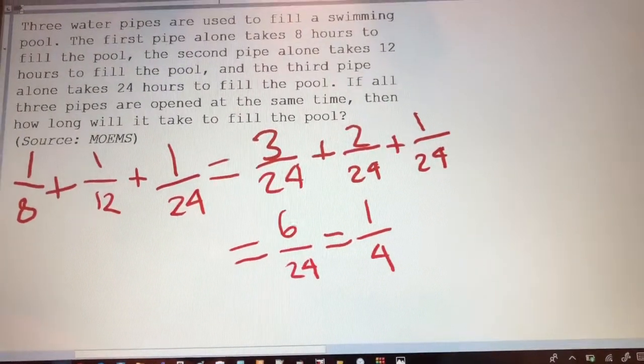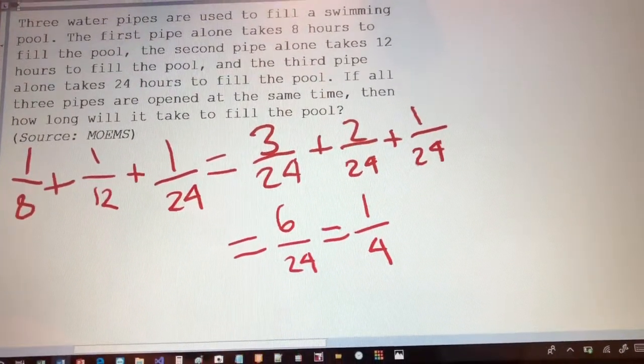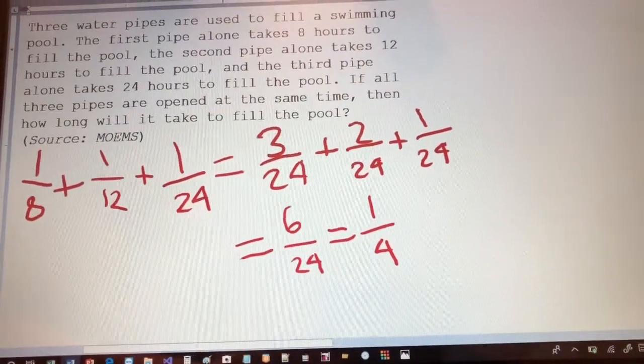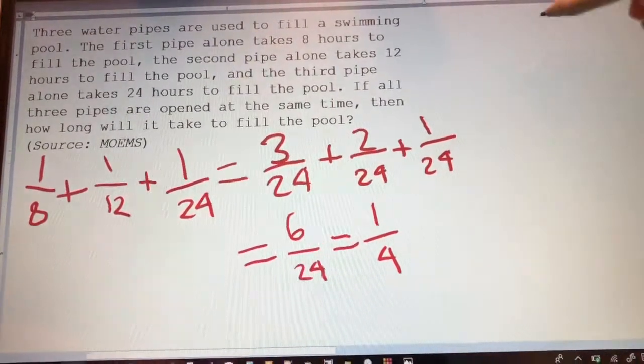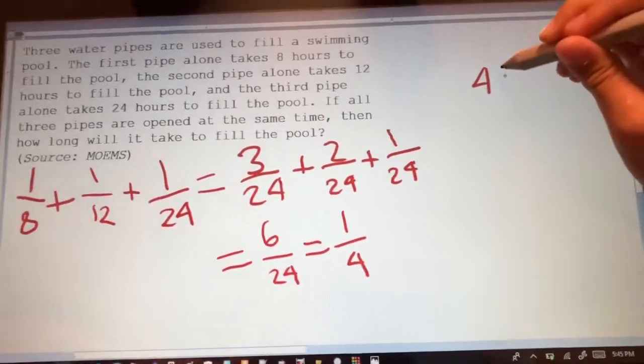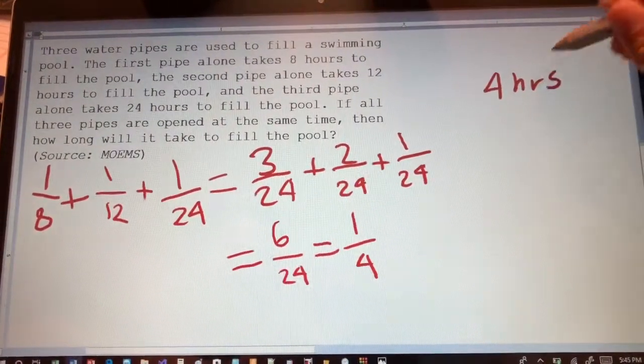So if all pipes are on, that means 1/4th of the pool will be filled up in an hour. So that means it will take 4 hours to fill the whole pool.